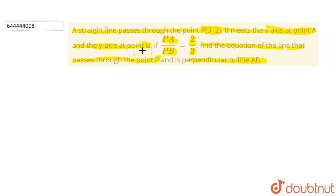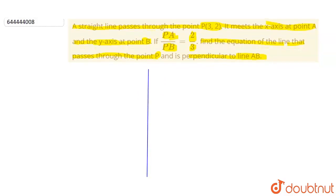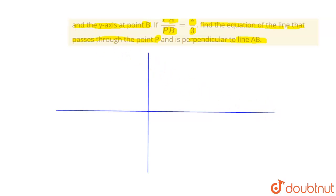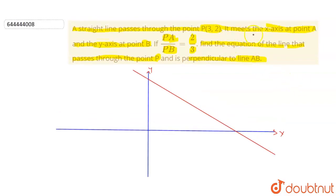Let's suppose we have a coordinate axis like this. This is the y-axis and this is the x-axis. We have a line that passes through the x-axis and y-axis like this. According to the question, this line meets the x-axis at point A. The coordinate of this point will be A(a, 0) because on the x-axis the y-coordinate is always 0.